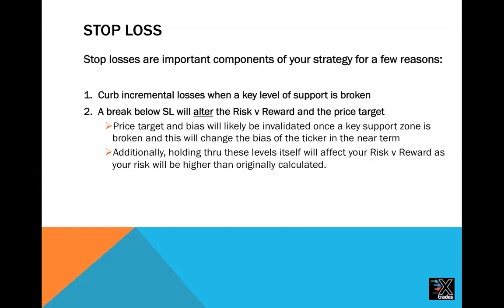After a key level of support is broken and you lose that high-volume trading area, prices can range more freely downwards. You can see your losses increase, even if you're in it 10-15 minutes too long once that support zone is broken. It curbs those incremental losses, but furthermore, once that key support is broken, it changes the bias of the setup — your previous trend was invalidated. A break below the stop loss is going to alter the risk-versus-reward and the price target.